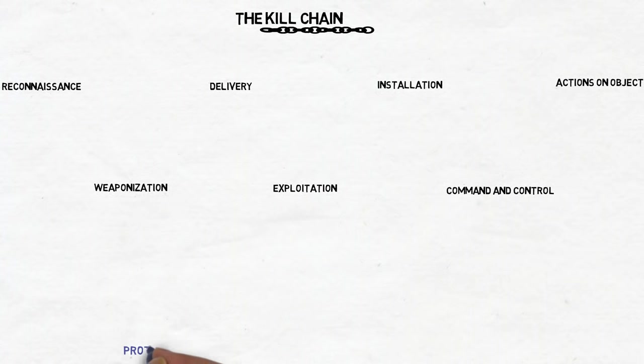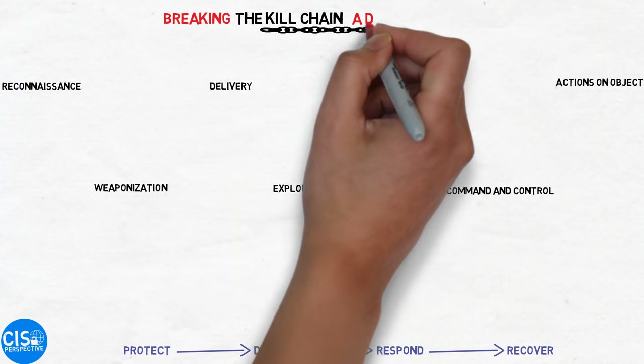To disrupt the attack, one or more of these steps must be broken for the entire chain to fail. In order for us to do that, we need to understand their playbook. Using the NIST Cybersecurity Framework as a reference, we'll look at tools at every phase that will lead to a multi-layered security plan for our organization. I'm Andy with the CISO Perspective, and this video is called Breaking the Kill Chain, a Defensive Approach.